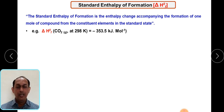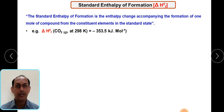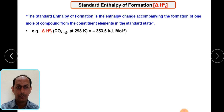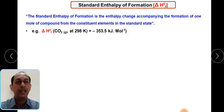The next important term is the standard enthalpy of formation. When individual constituent elements combine to form a compound — for example H₂ and O₂ combining — the standard enthalpy of formation is the enthalpy change associated with the formation of one mole of a compound from its constituent elements in the standard state. Whenever we say standard enthalpy, we must maintain the standard state.